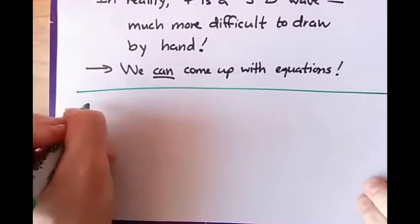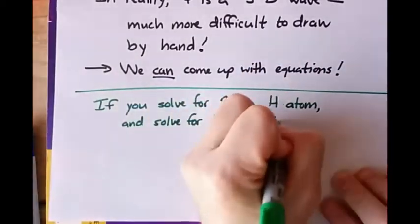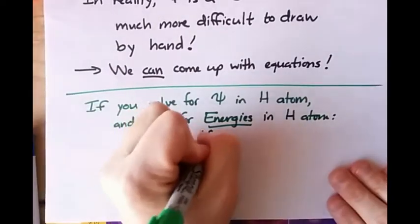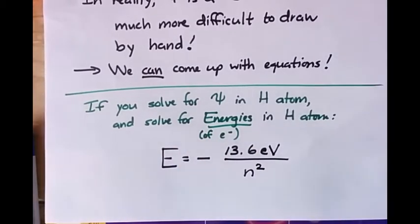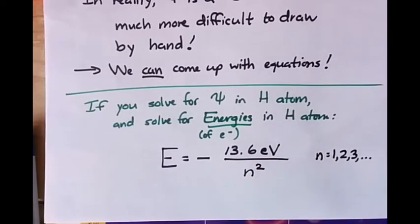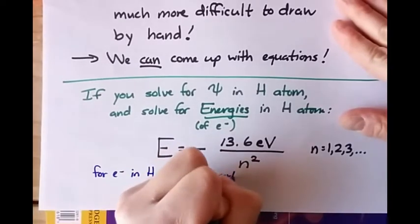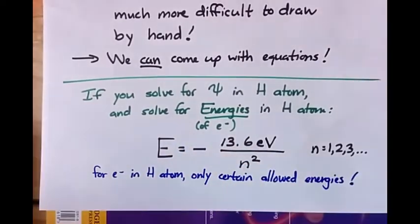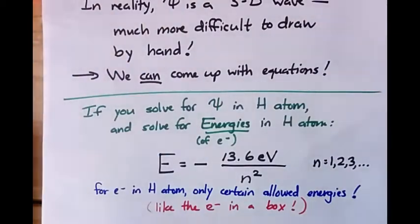These equations are complicated and a little beyond the scope of today's discussion. But if you get that wave function, you can find the corresponding wavelengths and energies. It turns out that for an electron in a hydrogen atom, the allowed energies are E equals negative 13.6 electron volts divided by n squared, where n equals 1, 2, 3, 4, 5, 6, and so on. So for electrons in a hydrogen atom, there are only certain allowed energies — just like our electron in a box.